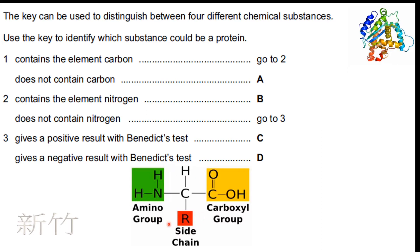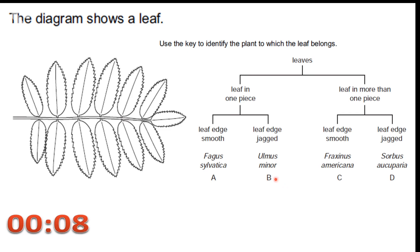We are going to check using basic amino acid criteria. First: does it contain the element carbon? Going to question two — yes, carbon is found here. Next: does it contain the element nitrogen? Yes, the amino group contains nitrogen. So the answer is going to be B.